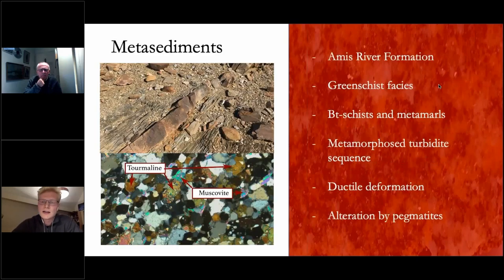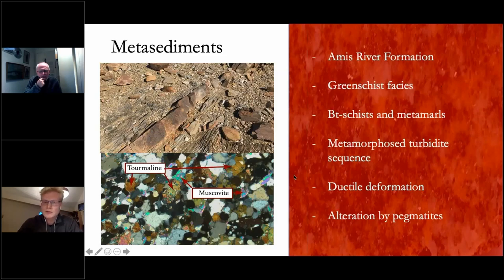The metasediments belong to the Omaheke River Formation, which is a greenschist facies metamorphosed turbidite sequence consisting of biotite schists and metamarls, which are interbedded as you can see in the image at the top there. They've all been subject to ductile deformation around the time of the granite emplacement and are also subject to alteration by pegmatites at the border of the pegmatites, mainly by tourmalisation, which you can see in this micrograph at the bottom here.